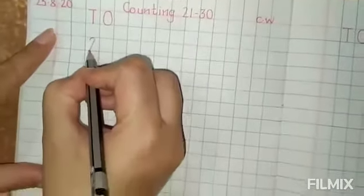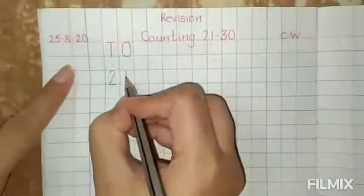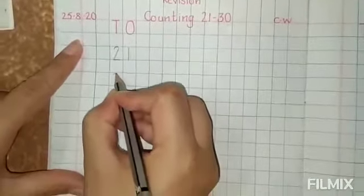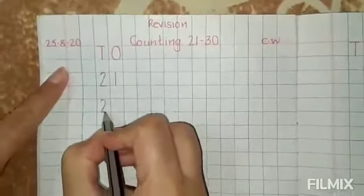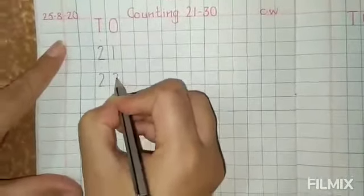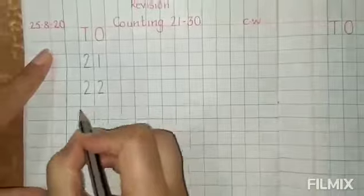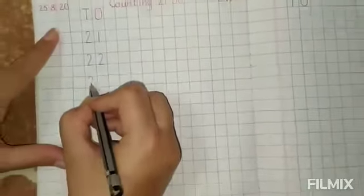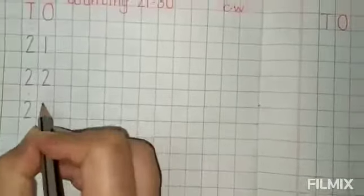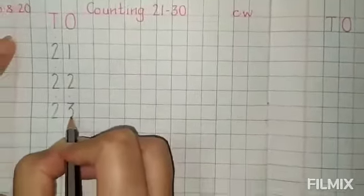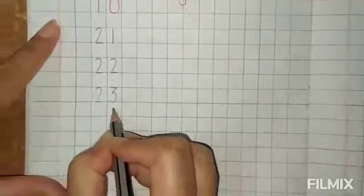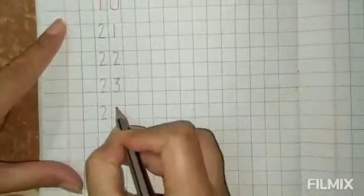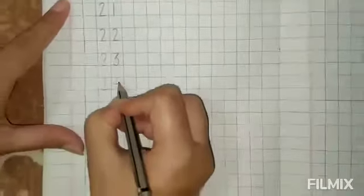2 tens, 1 ones, 21. Leave one box. 2 tens, 2 ones, 22. Leave one box. 2 tens and 3 ones, 23. Leave one box. 2 tens, 4 ones, 24.